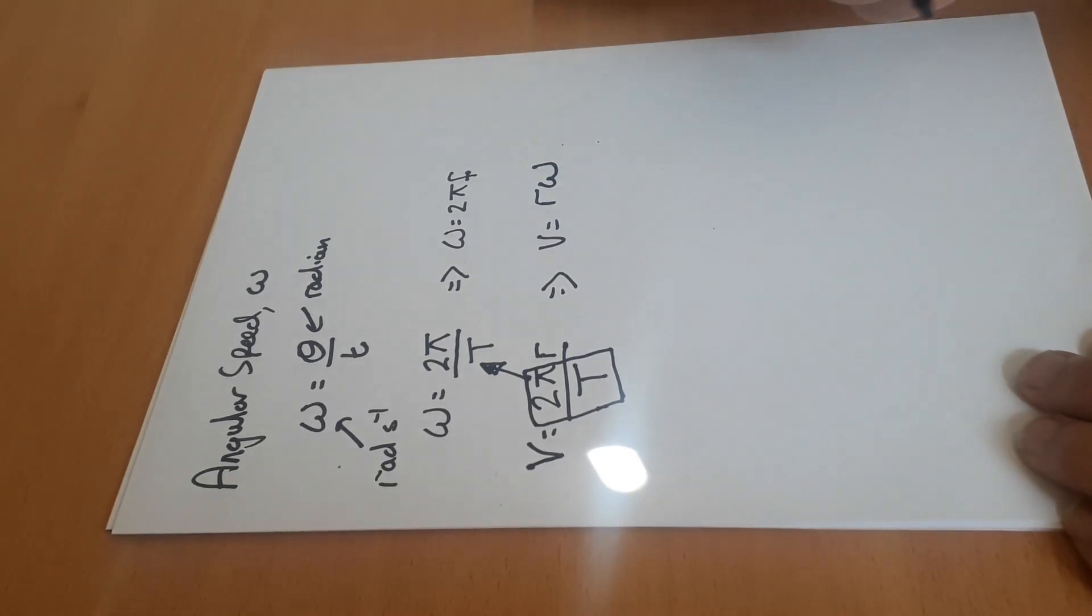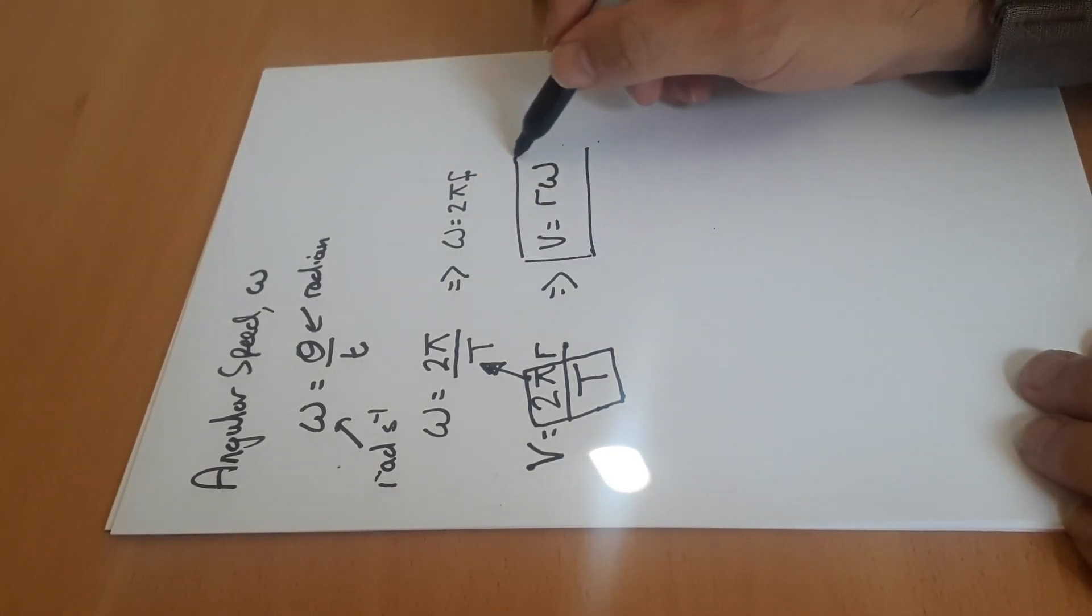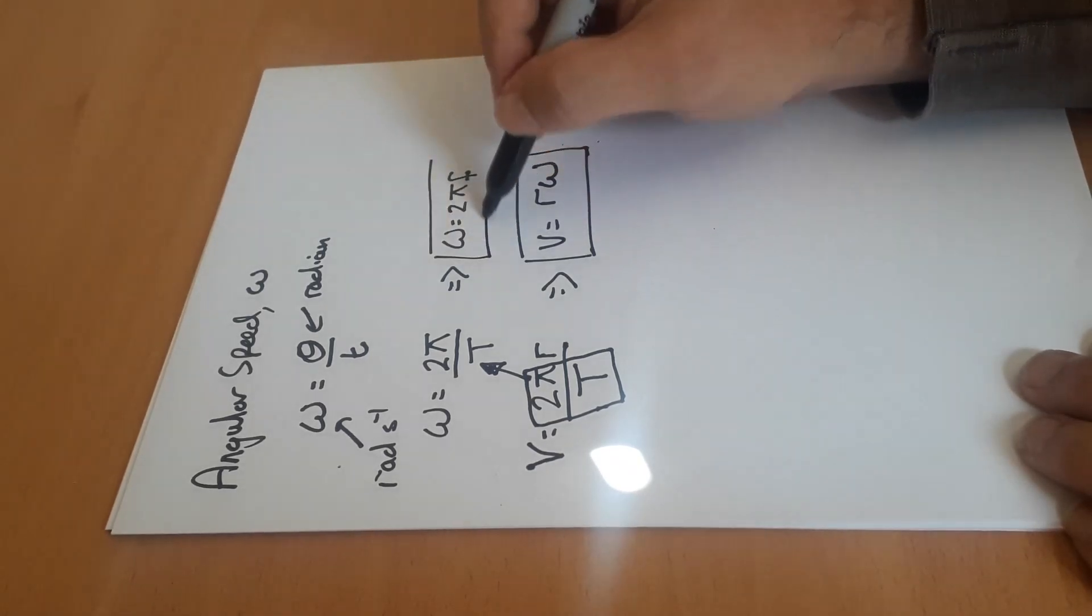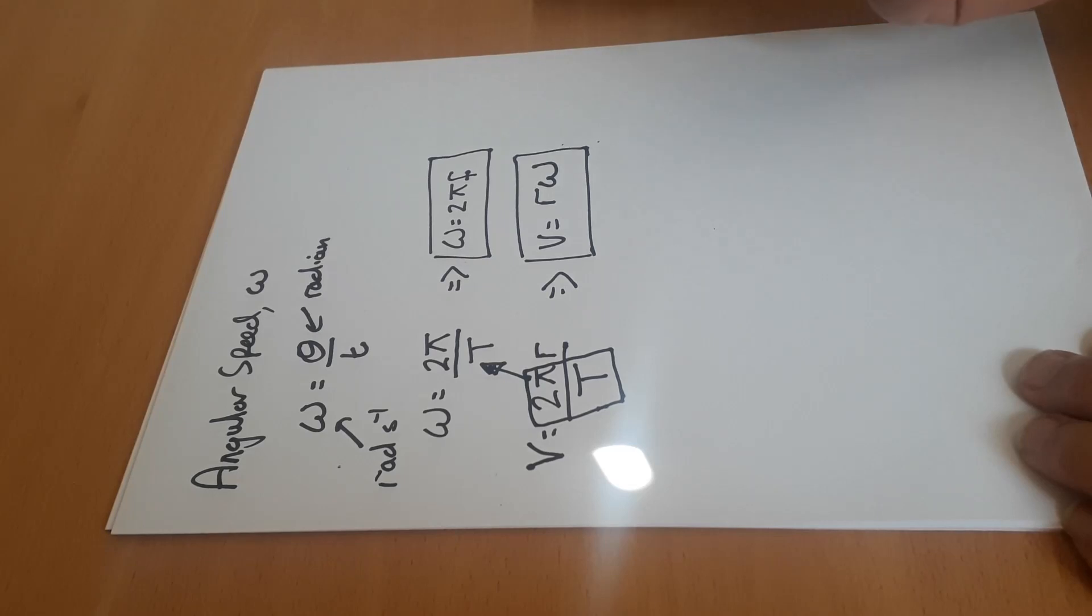So we've got a few equations now that we can use. This one is given in your equation booklet and this one is given in your equation booklet. So we've got some there, others aren't there, we just need to remember them from definition.